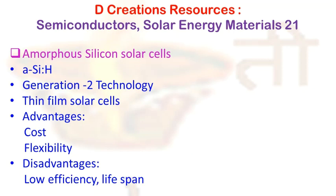A film of silicon prepared by vacuum evaporation technique up to a substrate temperature of 600 degrees Celsius is amorphous. These films as such cannot be used as optoelectronic devices because they contain a large density of defects in the form of dangling bonds, which act as recombination centers for photo-generated charge carriers.